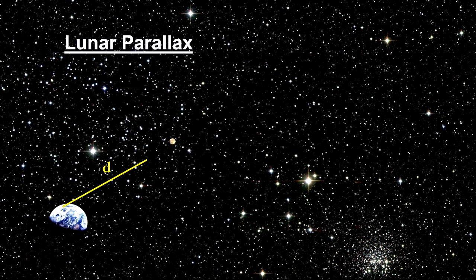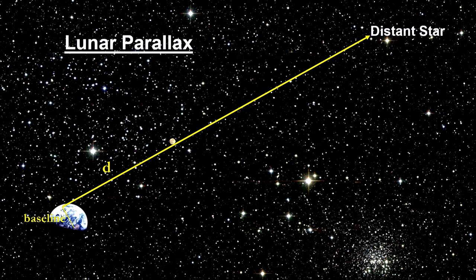1. Draw a line from a point on Earth to the Moon directly overhead. 2. Extend this line to a distant star. 3. From a measured distance across the Earth, draw another line to the distant star, and another one to the Moon.